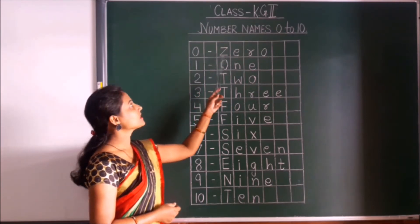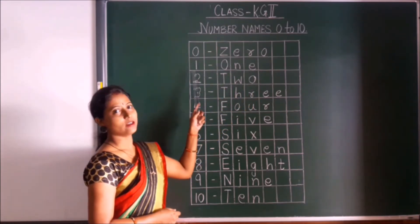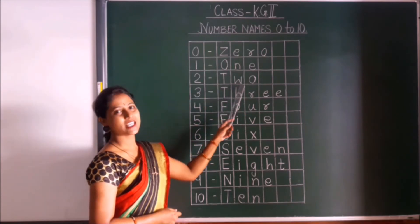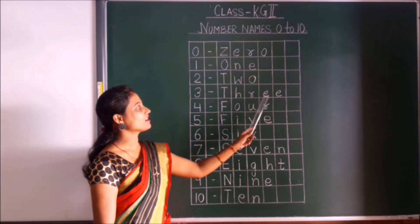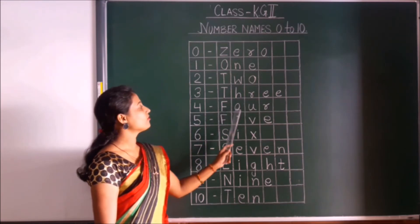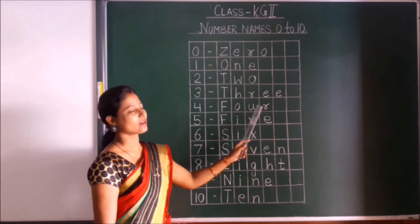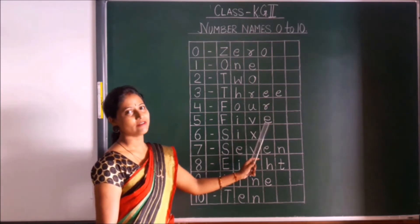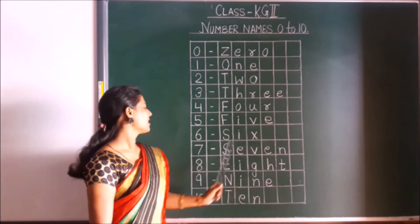Let's start. 0 Z-E-R-O, 0. 1 O-N-E, 1. 2 T-W-O, 2. 3 T-H-R-E-E, 3. T-H-R-E-E, 3. 4 F-O-U-R, 4. Children, are you repeating with me? Yes, please repeat. F-O-U-R, 4.